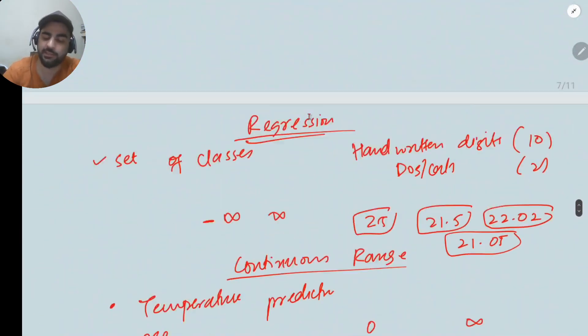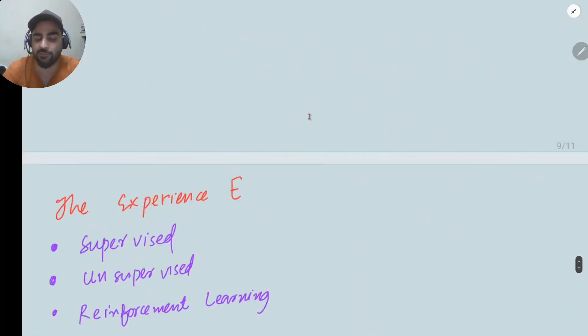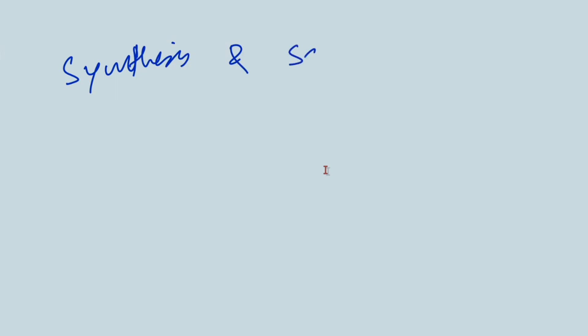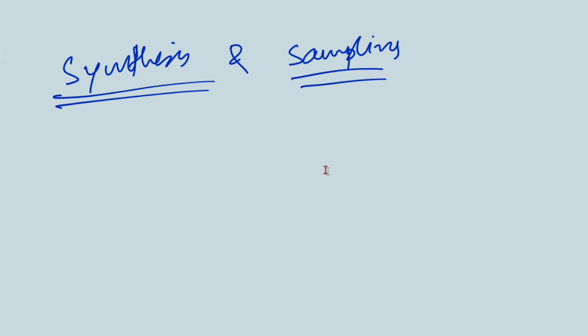Then we have synthesis and sampling. By synthesis I mean if you ask a machine to generate something — generate a story, write a poem, or answer a question — it has to synthesize that output. By sampling I mean, for example, out of 10 objects pick 5 objects. So synthesis means if you want to generate something, and sampling means if you have to sample something.